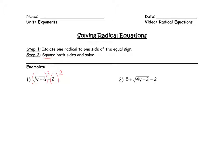Now when squaring a radical — see how this radical is here and the squared is here — when you square a radical, the square and the square root cancel each other out. So we're left with y minus 6 equals 4. Now I'm going to show you why the square and the square root cancel each other out. Let's look at an example over here.